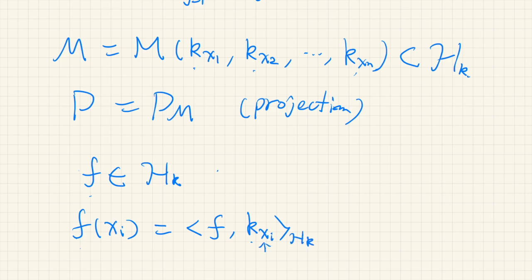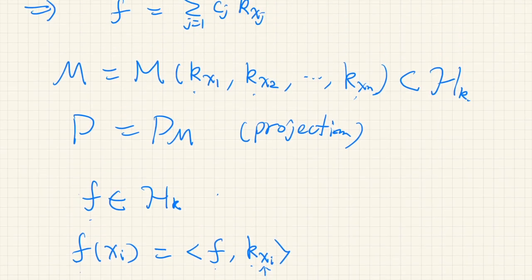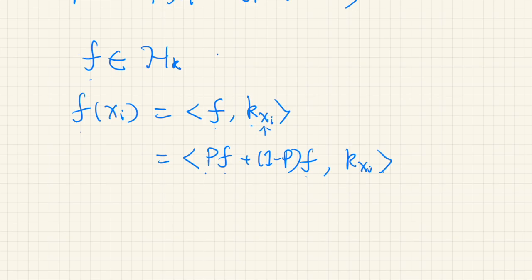So this inner product is defined in this Hilbert space. And from now on, for simplicity, we just omit this subscript. And using the orthogonal decomposition, this f can be decomposed into two parts, Pf and (1-P)f. So, this Pf is the projection onto the subspace M, and (1-P)f is the projection onto the orthogonal complement of M.